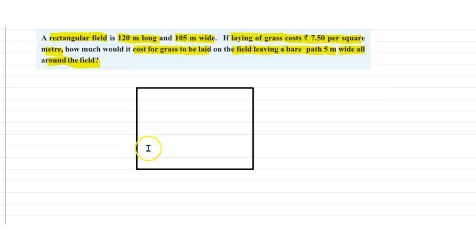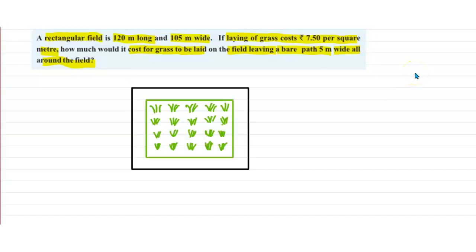Let's draw the area where the grass has to be laid. This is the green part where we have to lay the grass and the bare part is the white part.